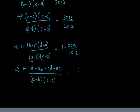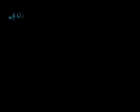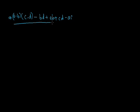That is equal to minus 1 upon 2012. Let's continue. Taking the LCM, it becomes (a minus b)(c minus d) minus bd plus ab plus cd minus ac, all upon (a minus b)(c minus d).